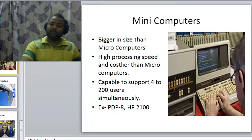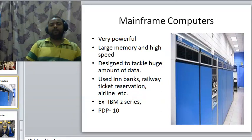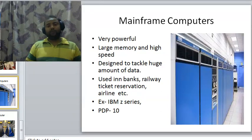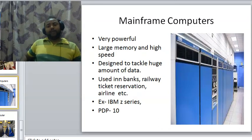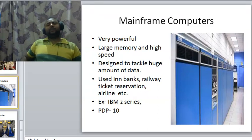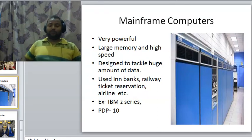The third category is mainframe computers. These are very powerful computers with large memory and high speed, designed to tackle a huge amount of data. They are used in banks, railway ticket reservation, airlines, and many other places. IBM Z series and PDP 10 are examples of mainframe computers.